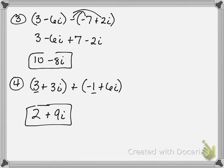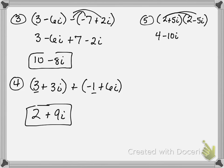So on 5 you're multiplying, so you've got to do the whole FOIL thing like we used to do. 2 times 2 is 4, 2 times negative 5i is negative 10i, then we take 5i times 2 which is 10i, 5i times negative 5i is negative 25i squared. So I notice I've got like terms in the middle — negative 10 and positive 10 — they cancel each other out.